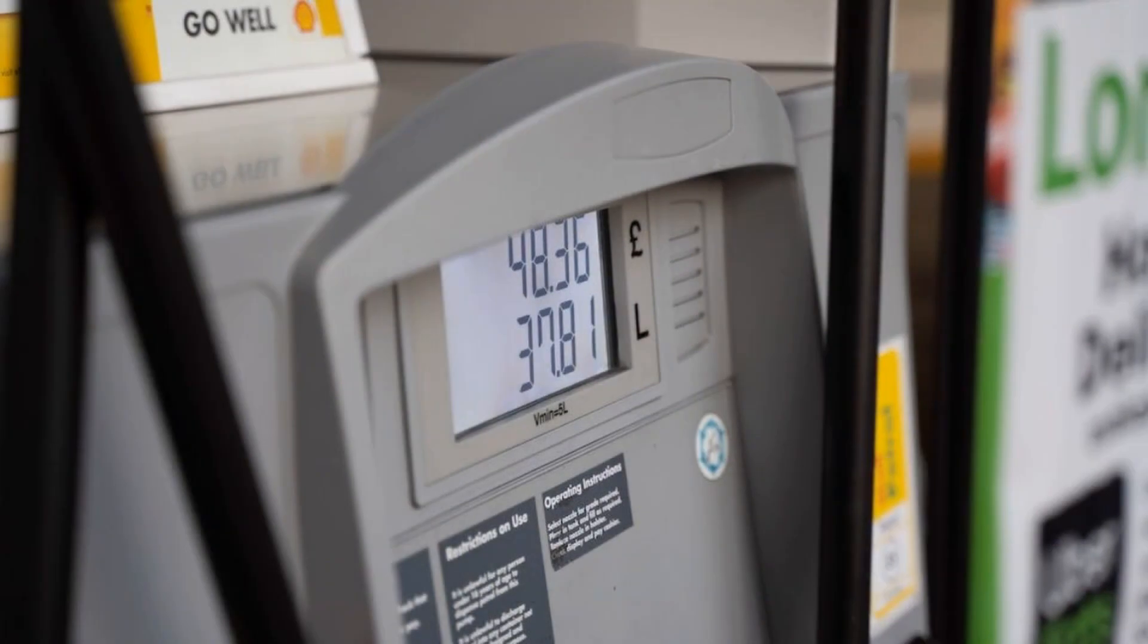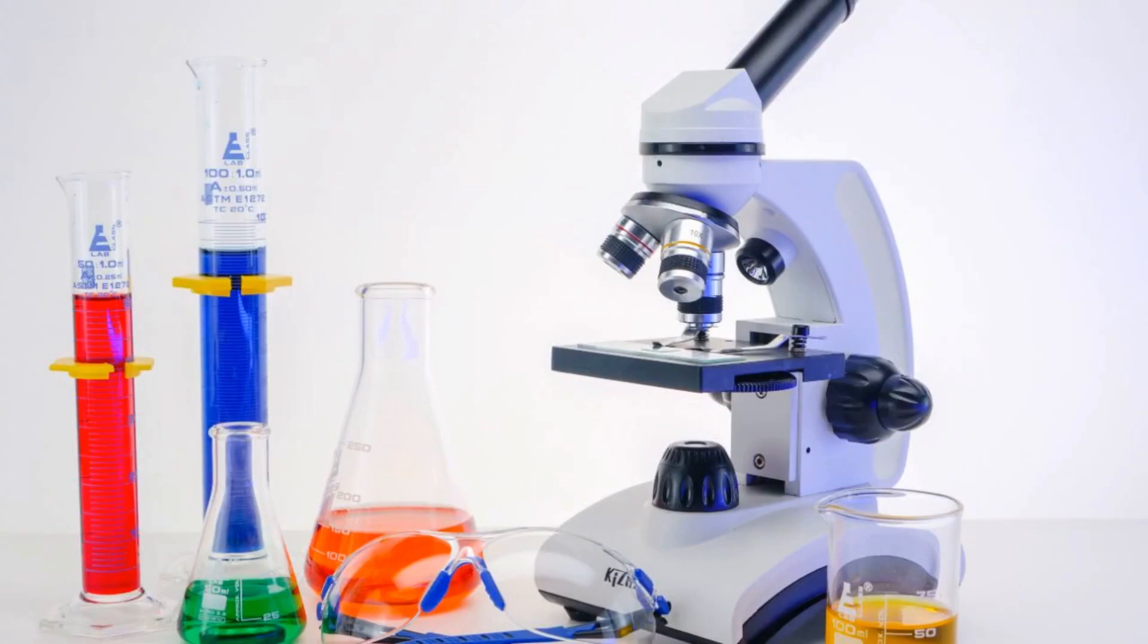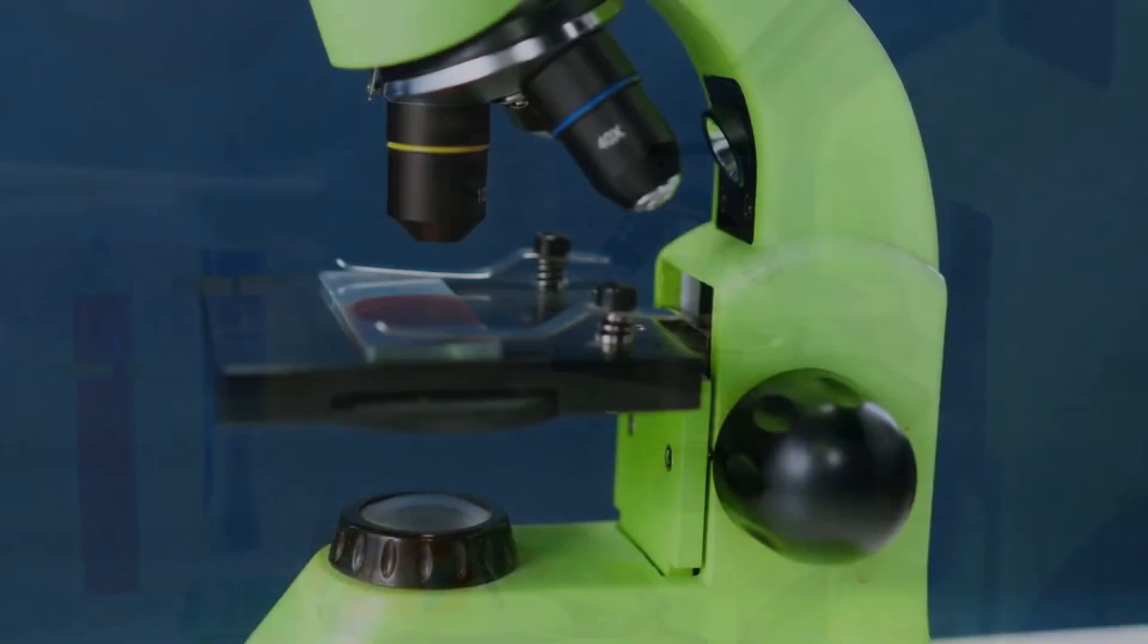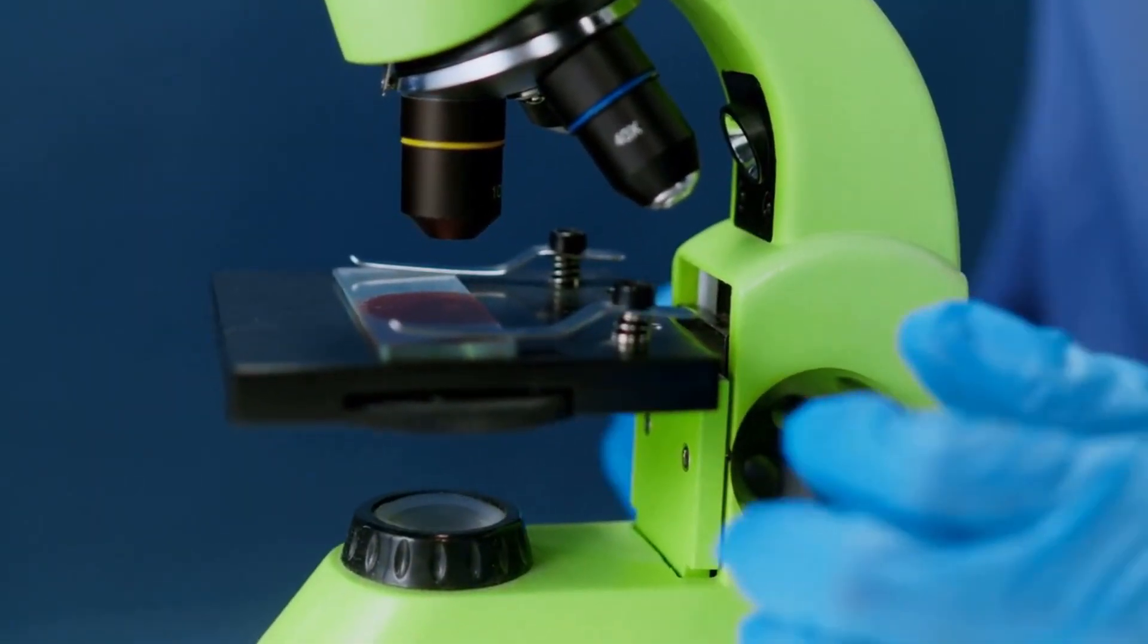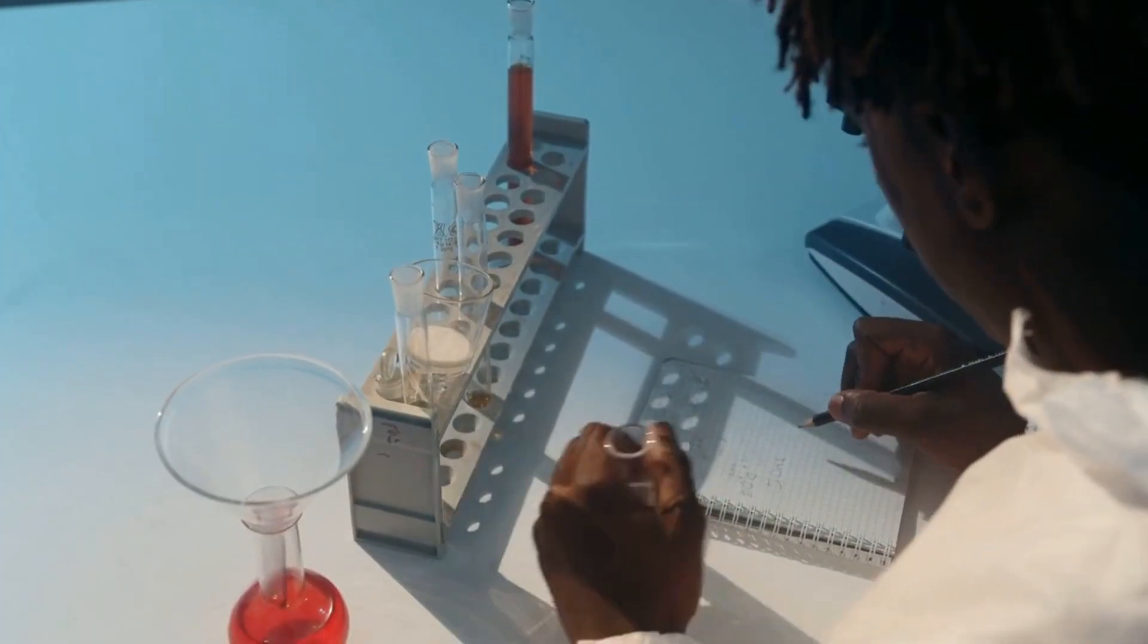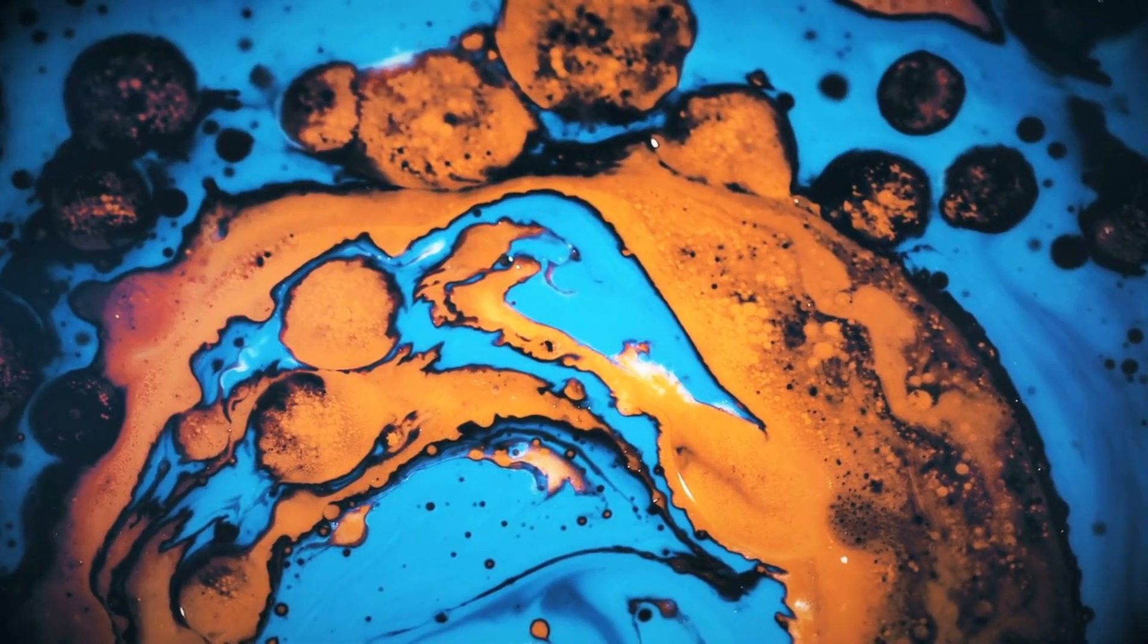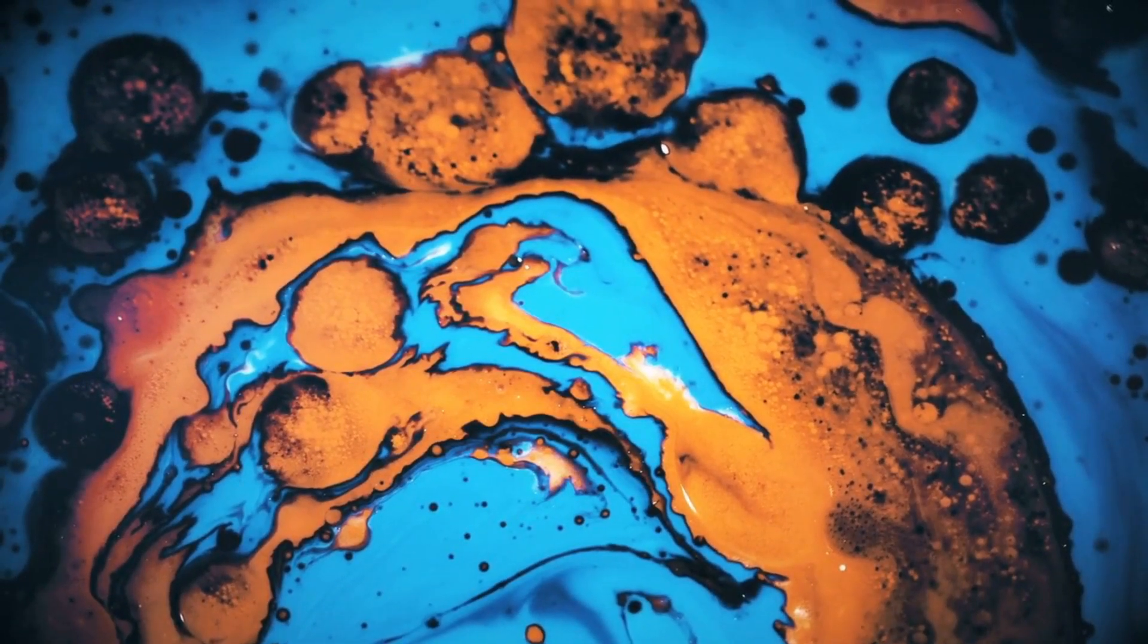The tools used for this purpose are quite expensive, which one cannot afford at home. The shelf lives of many medicines are determined with the help of analytical chemistry. It is used to check for the presence of adulterants in drugs. Soil can be tested to check for appropriate concentrations of minerals and nutrients that are necessary for plant growth.